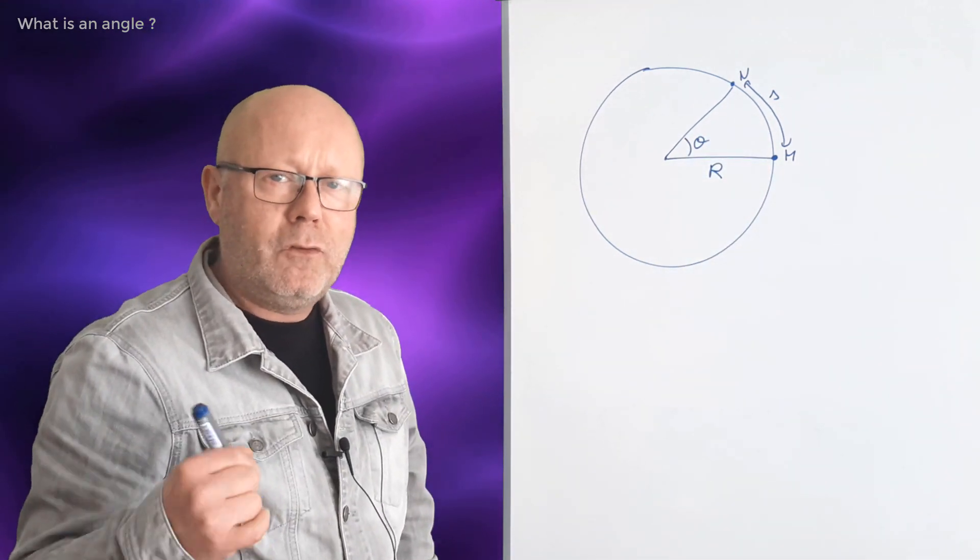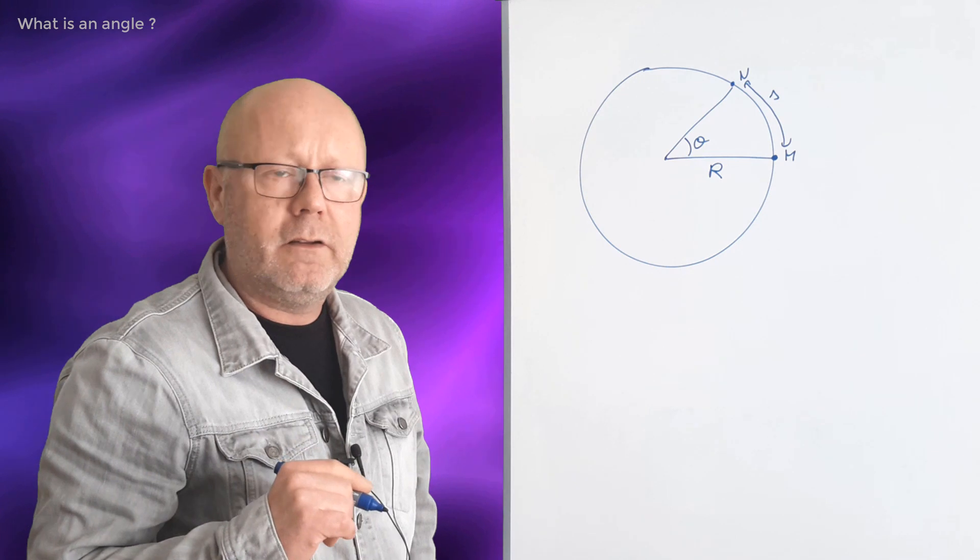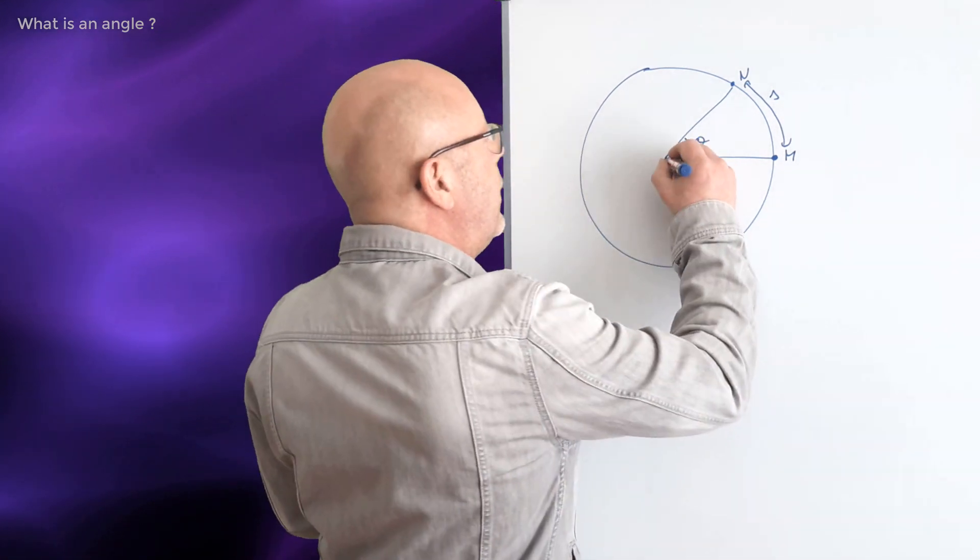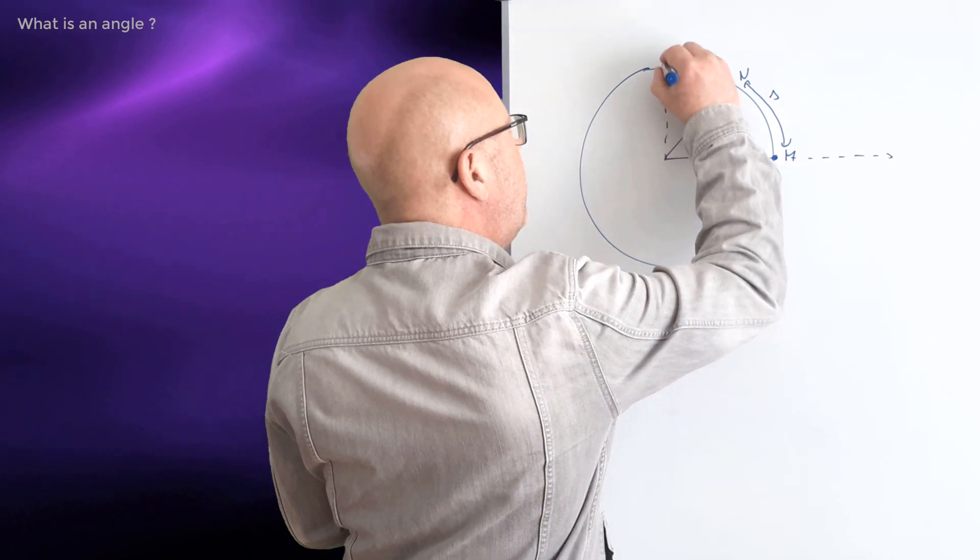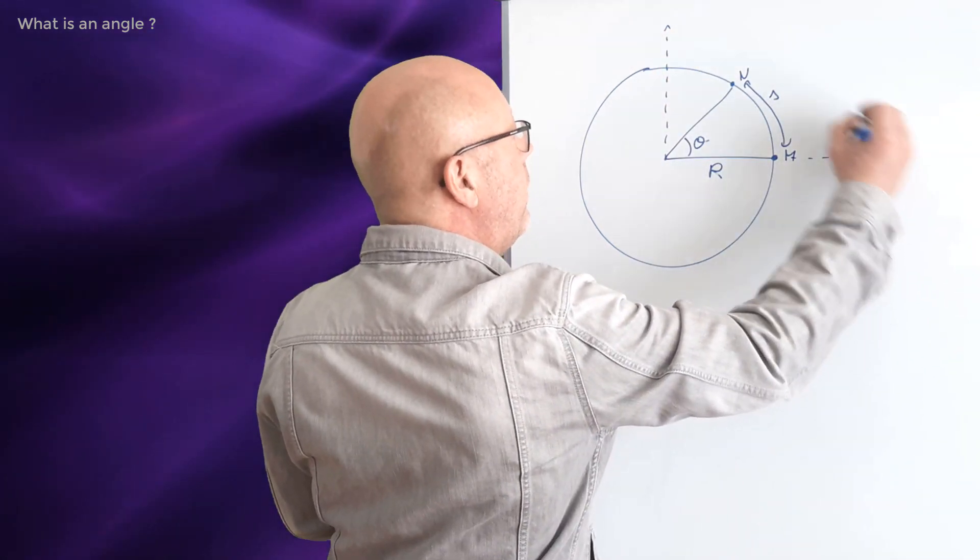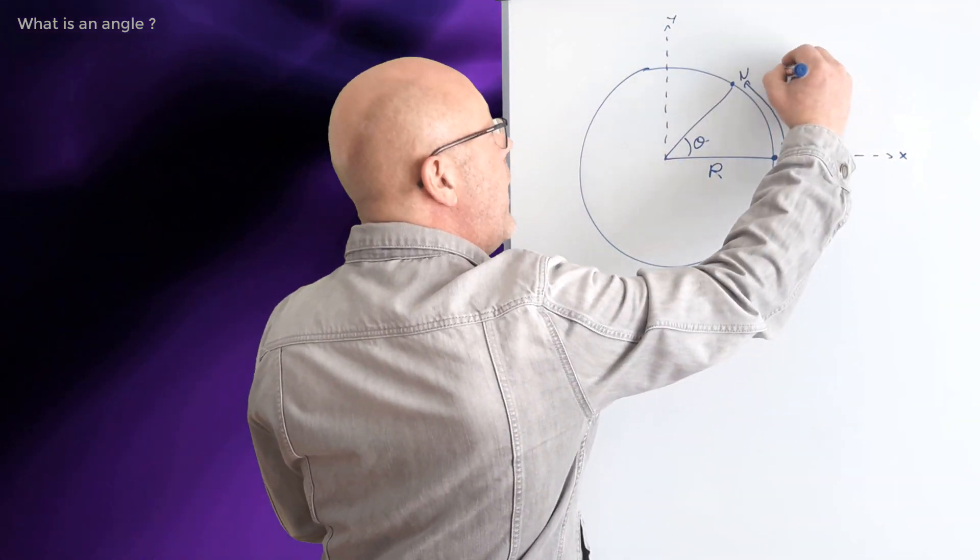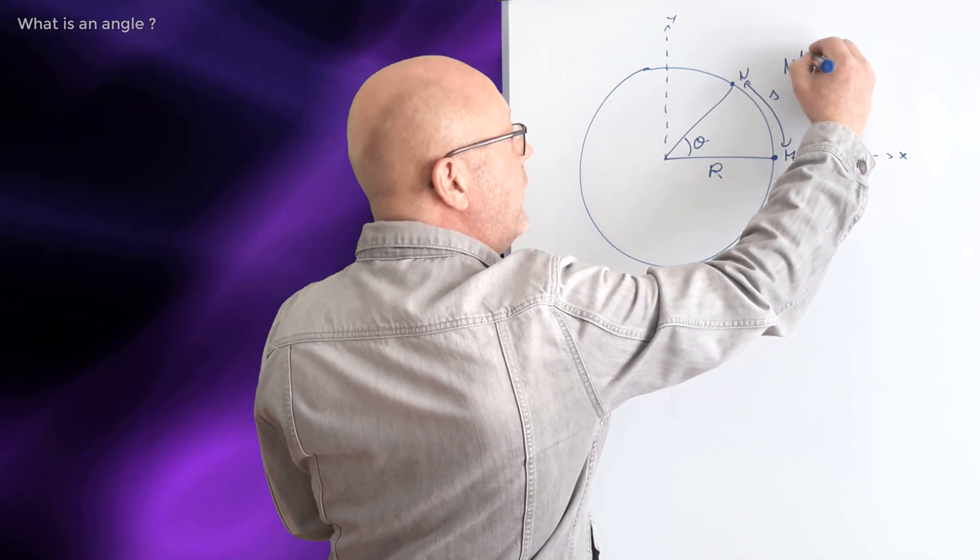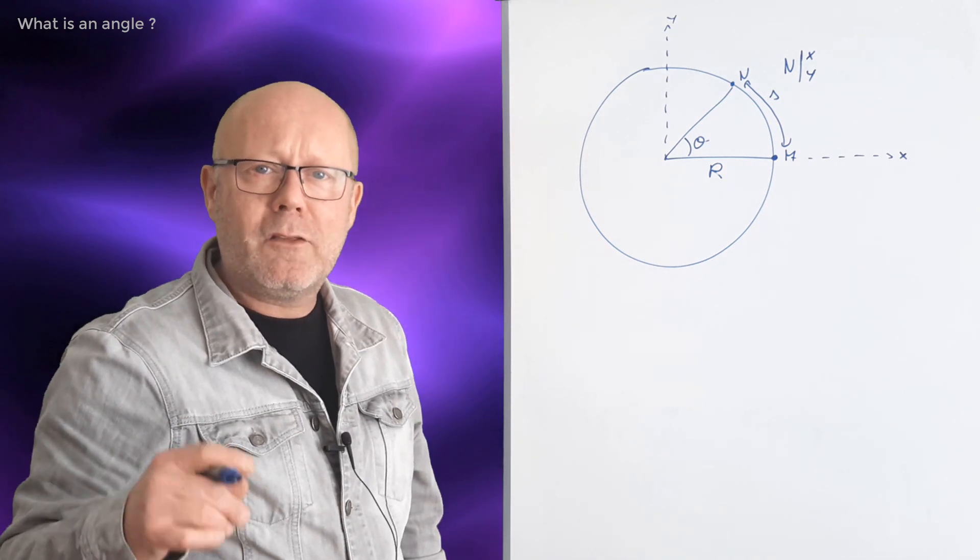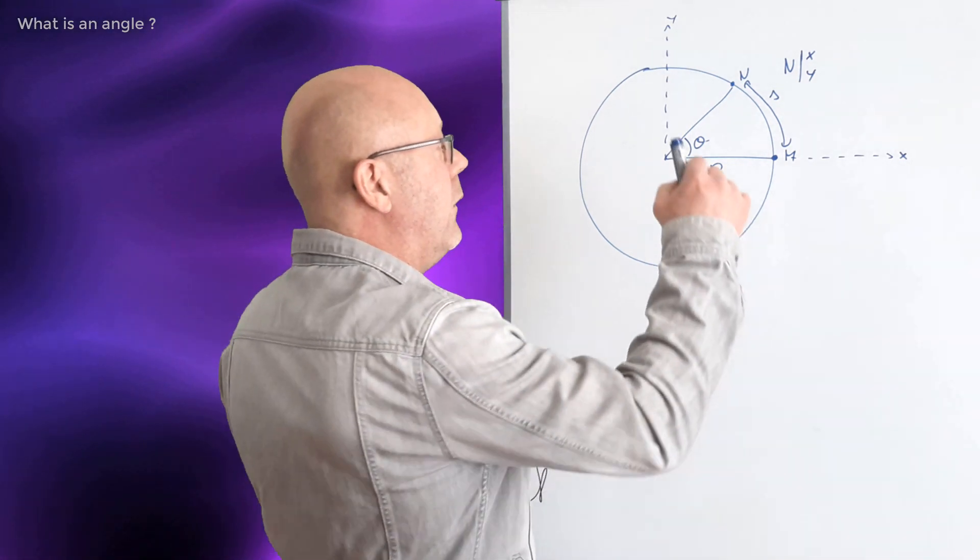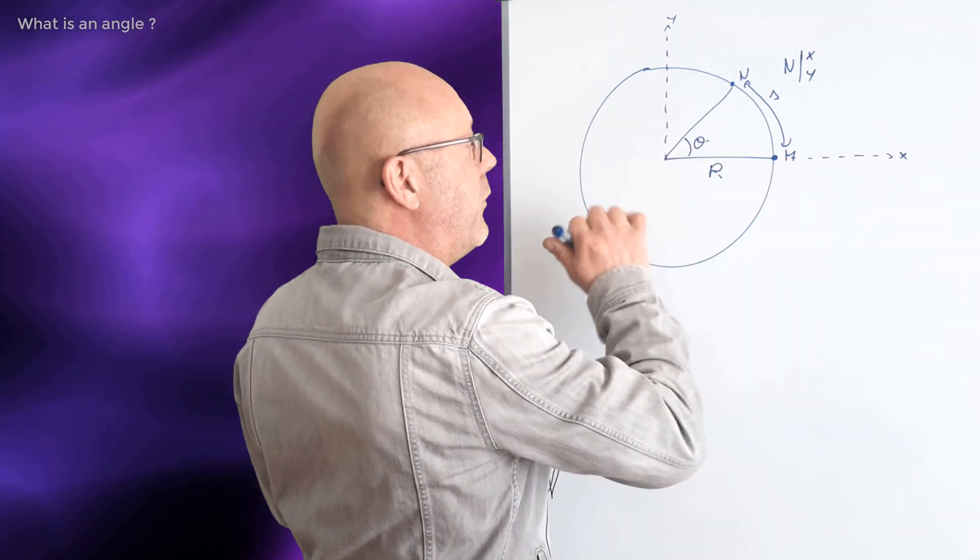So note that we have two ways of knowing where N is. We could define some coordinates, Cartesian coordinates, by defining two axes, x and y. So N would have a coordinate x and a coordinate y. We could also define the position of point N with the angle and the radius of the circle.